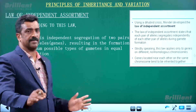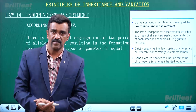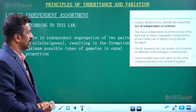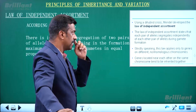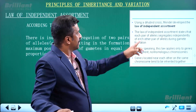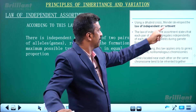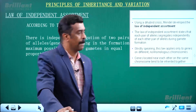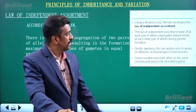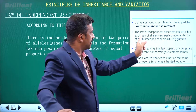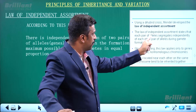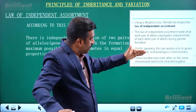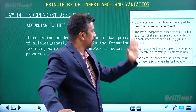Independent Assortment. This is the animation. Using a dihybrid cross, Mendel developed the law of independent assortment. This law states that each pair of alleles segregates independently of each other pair during gamete formation.